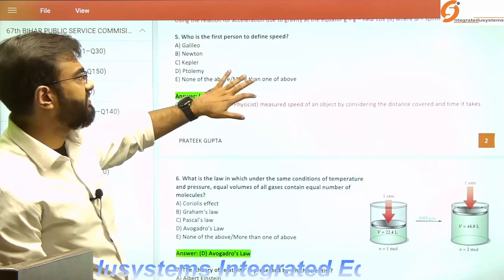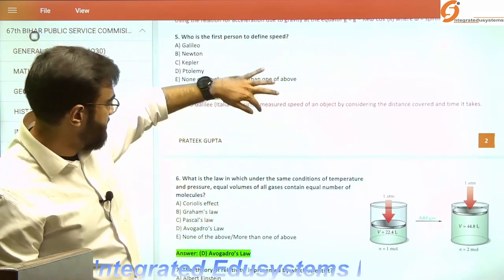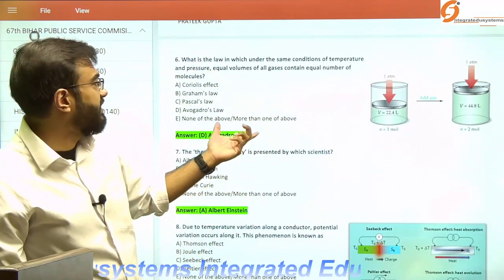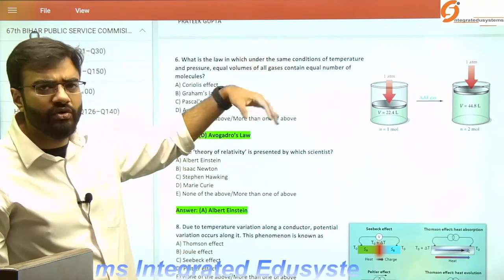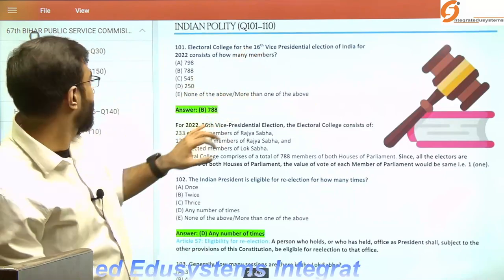This is a factual question: who was the first person to define speed? That is Galileo Galilei. Now, an interesting one about Avogadro's law.